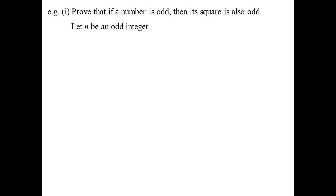Prove that if a number is odd, then its square is also odd. Let N be an odd integer. Using notation, N equals 2K plus 1, where K is an integer — that will always create an odd number. Square both sides, because we want to prove that its square is also odd. So N squared equals (2K + 1) squared.